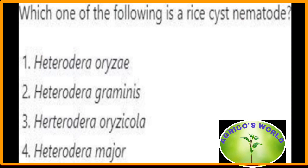Which one of the following is a rice cyst nematode? Heterodera oryzecola is the rice cyst nematode, and the cereal cyst nematode is Heterodera avenae.